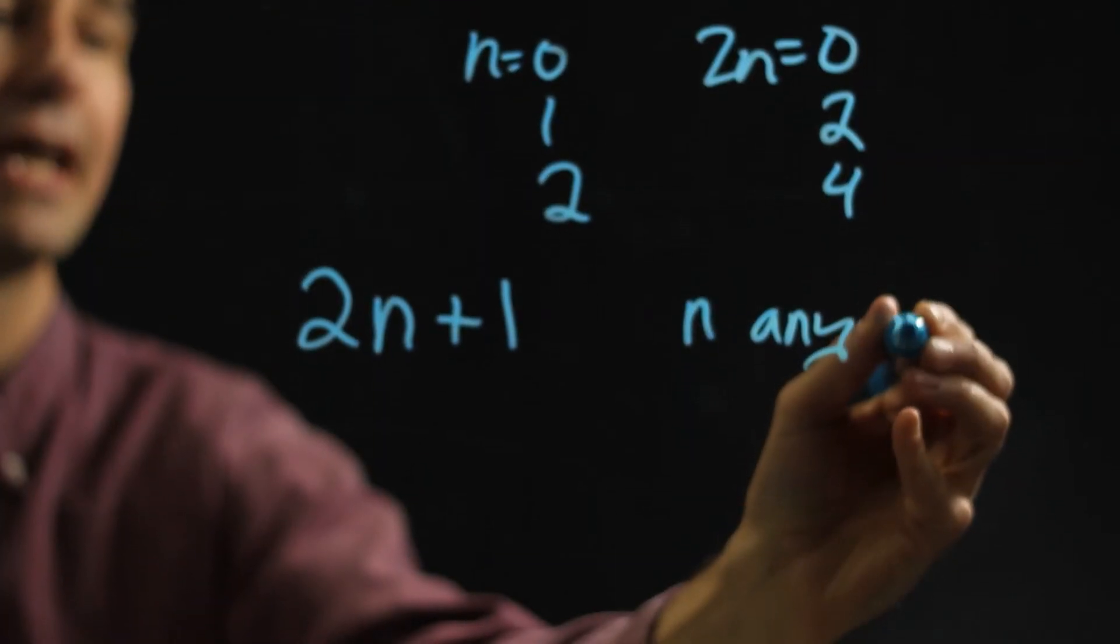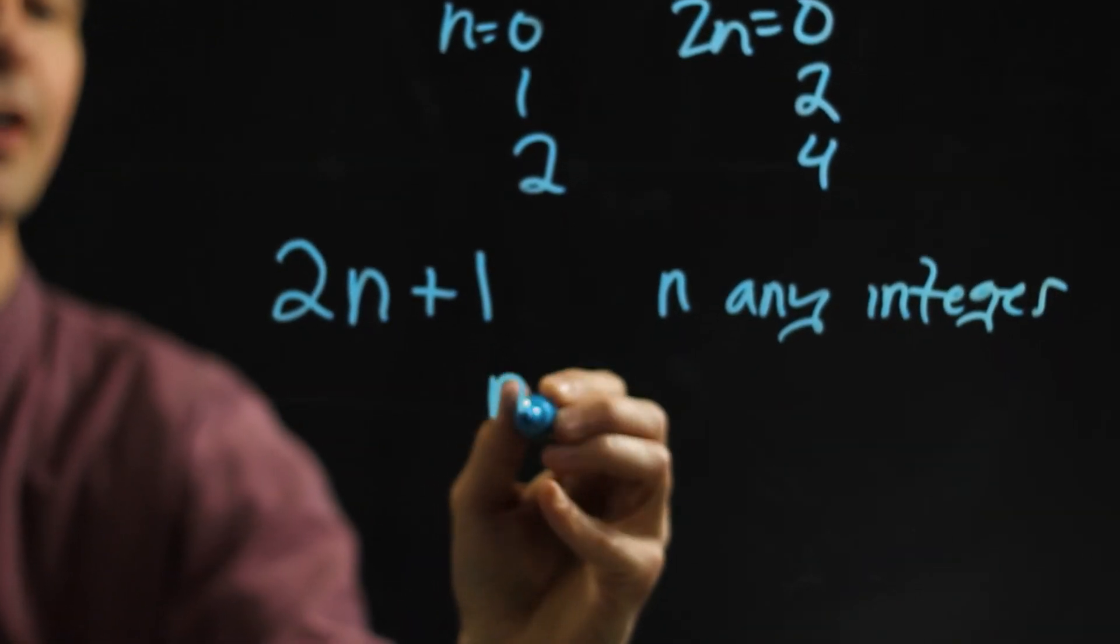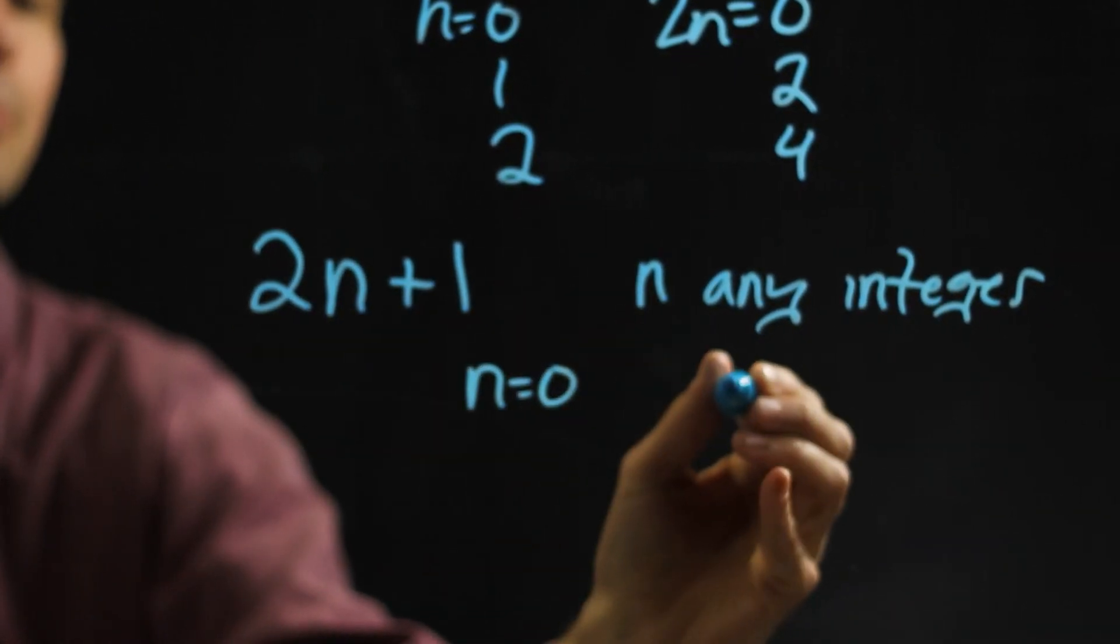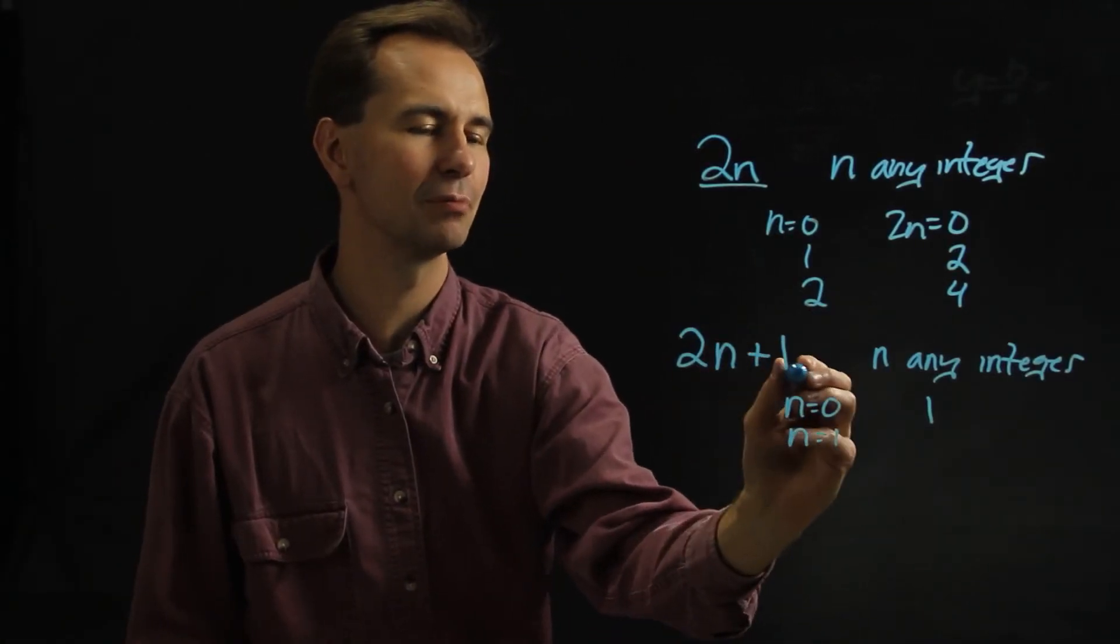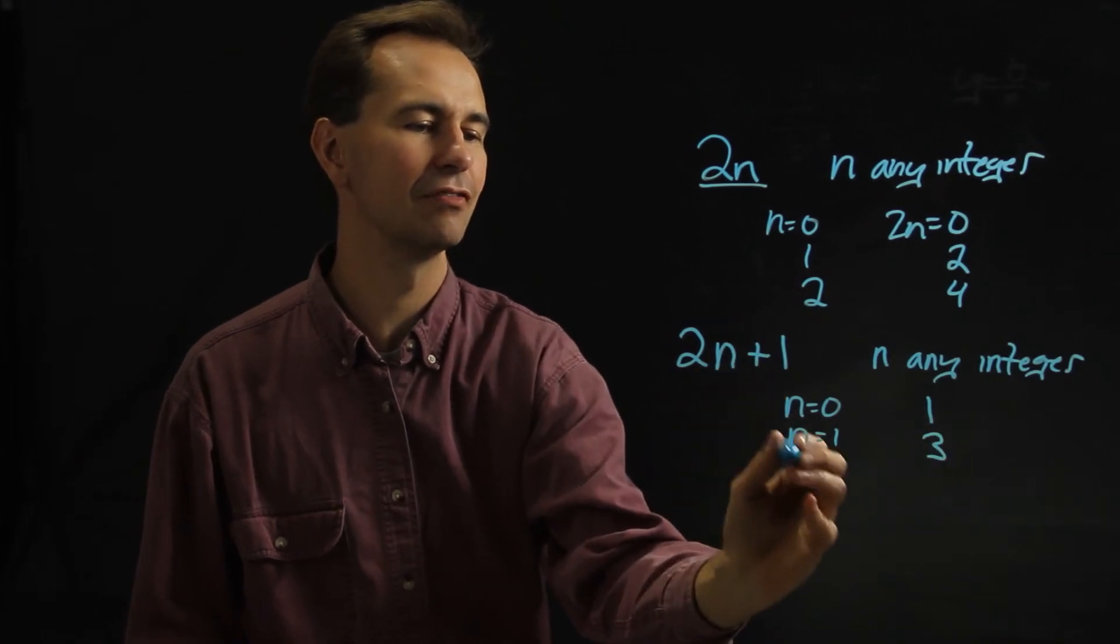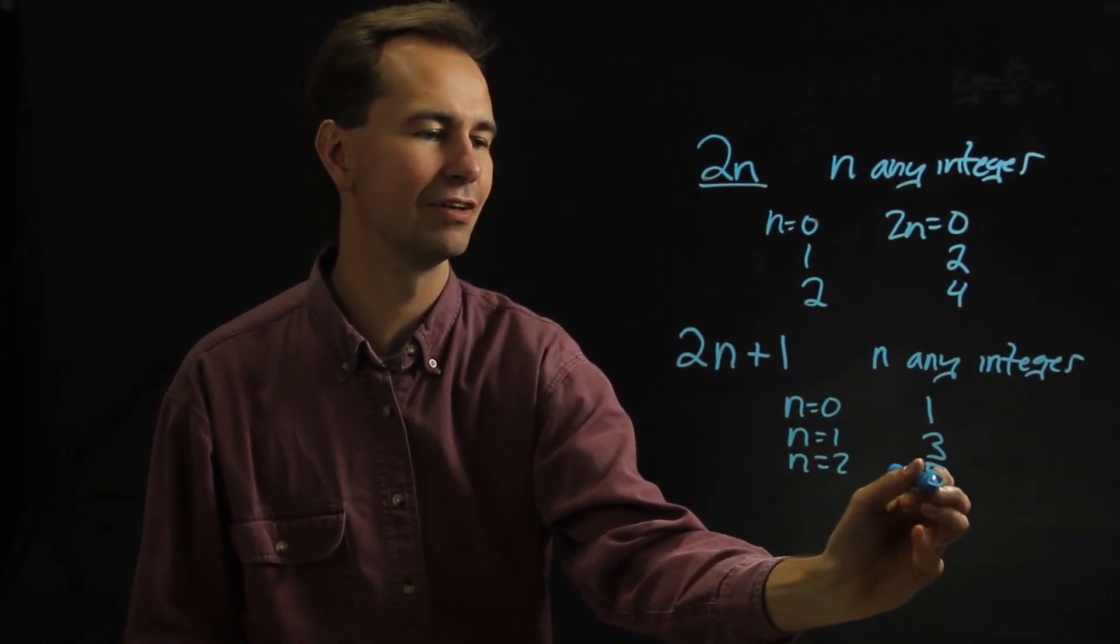So as long as n is an integer, for example, if n is 0, then 2n plus 1 will be 1. If n is 1, then 2n plus 1 will be 3. If n is 2, then 2n plus 1 will be 5, and so on.